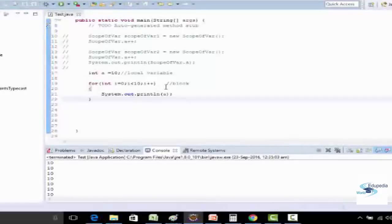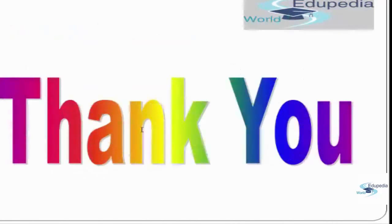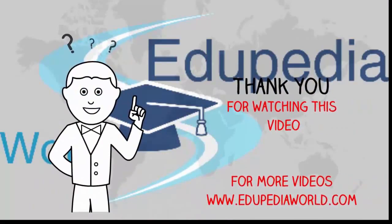Two topics are still remaining that I planned to cover in this tutorial: constant and symbolic constant, and default values of variables. But I don't want to stretch this tutorial too long, so I am going to cover those two topics in the next video. For now, you can go through the link I have provided if you want to read more about scope of variables. Thank you guys, let's meet in the next tutorial. Bye.